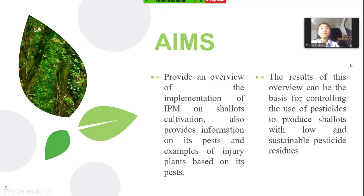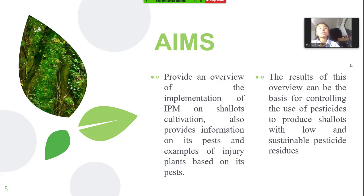The aims of the topic are to provide an overview of the implementation of IPM and also provide information. The results of this overview can be the basis for controlling the use of pesticides to produce shallots with low and sustainable pesticide residues.